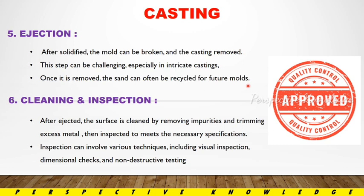The sixth and final step is cleaning and inspection. The surface is cleaned by removing impurities and trimming excess metal, then inspected to meet necessary specifications. Inspection can involve various techniques including visual inspection, dimensional checks, and non-destructive tests. We analyze different types of testing to check quality — this is cleaning and inspection.